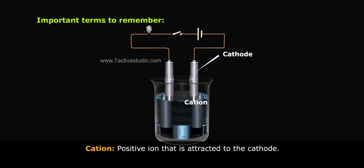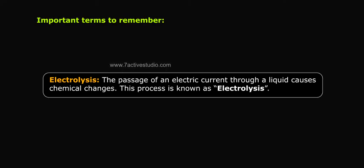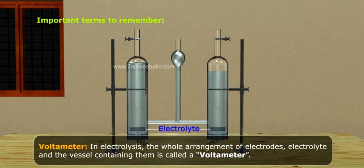Anion: a negative ion that is attracted to the anode. Cation: a positive ion that is attracted to the cathode. Electrolysis: the passage of an electric current through a liquid causes chemical changes. This process is known as electrolysis.